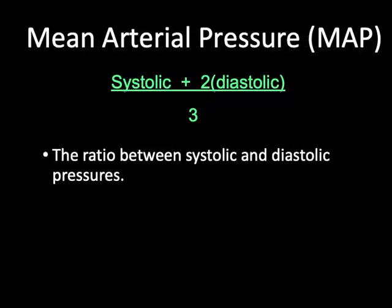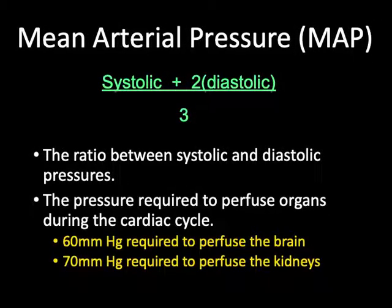Blood pressure is a useful measure, but what's more critical for critically ill patients is mean arterial pressure. Mean arterial pressure is a ratio between systolic and diastolic, and automated blood pressure machines will display it directly. It tells us whether pressure is adequate to perfuse vital organs. Sixty millimeters of mercury is the minimum MAP to maintain brain perfusion in most patients, and about 70 is required for kidney perfusion. The goal, even in critical care with permissive hypotension, is to keep MAP well above 70.